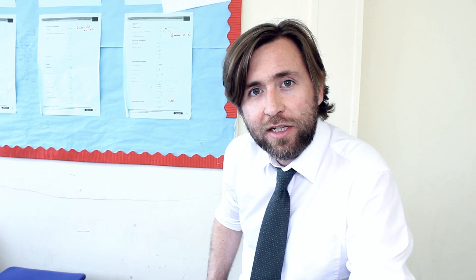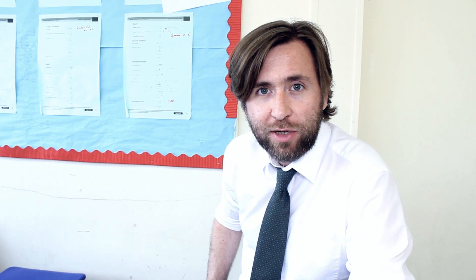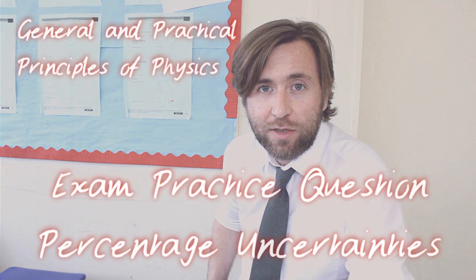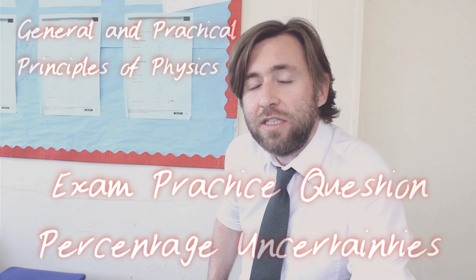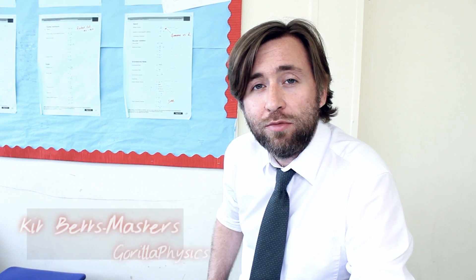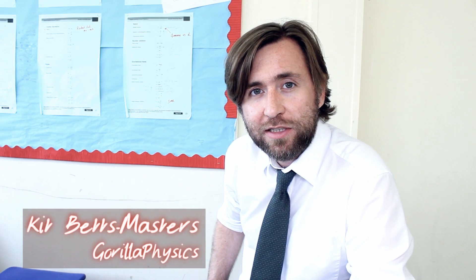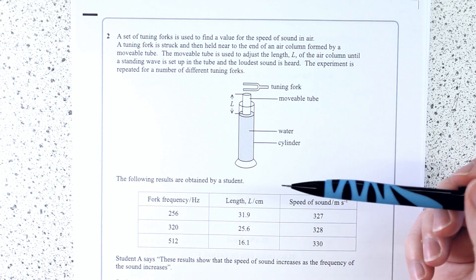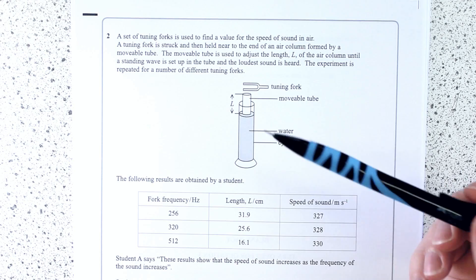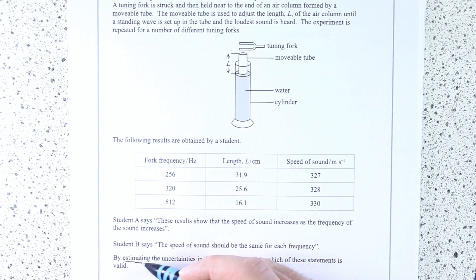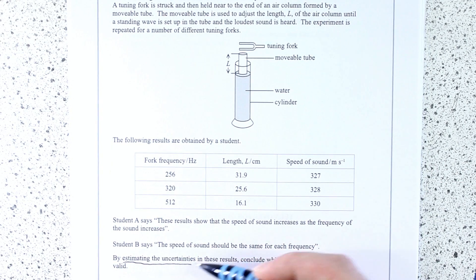This question is actually about an experiment to do with standing waves in closed pipes, but you didn't need to know any of that to get the right answer. What it really is about is: can you calculate and combine percentage uncertainties? I really like this question — I think it's quite straightforward. It's actually all about estimating uncertainties.